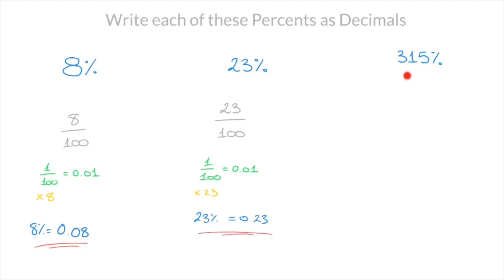Finally, let's say we have to write 315% as a decimal. As always, we can start by stating that this equals 315 over 100. So that's 315 hundredths. And since one hundredth or 1 over 100 equals 0.01,